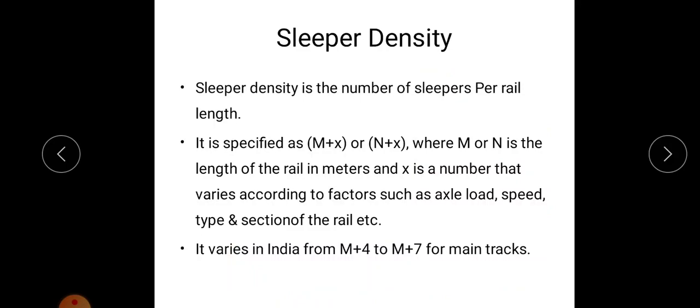The next is sleeper density. So what is meant by sleeper density? It is the number of sleepers per rail length. So we are providing particular number of sleepers per rail length. That is known as sleeper density. And it is specified as M+X or N+X, where M or N is the length of the rail in meters.